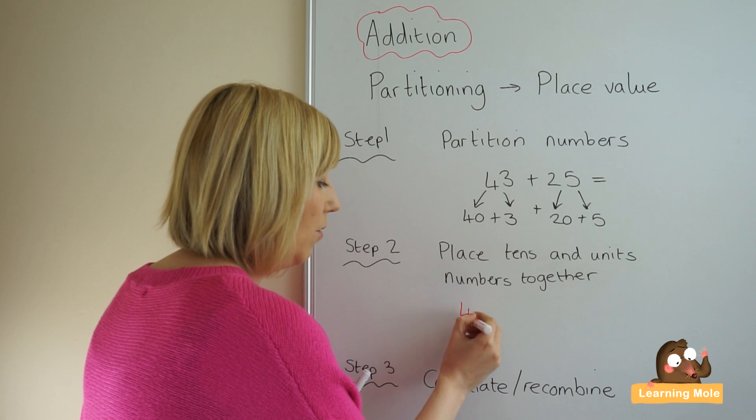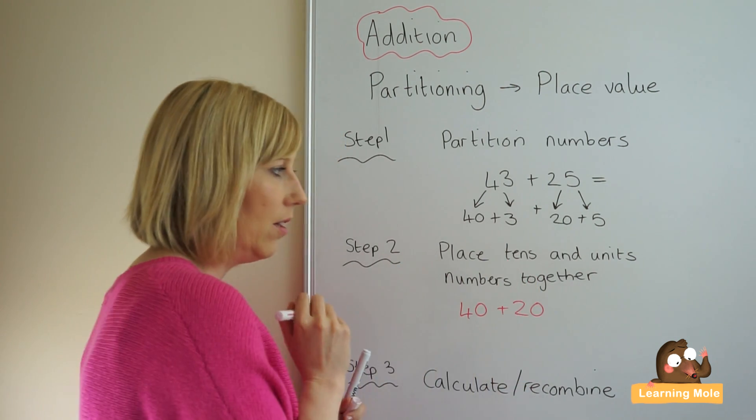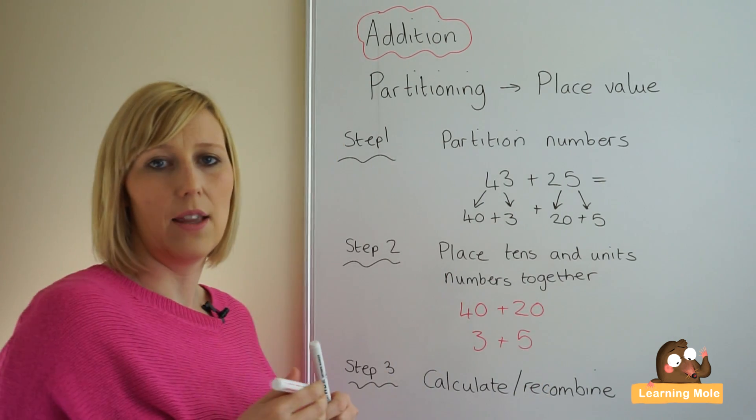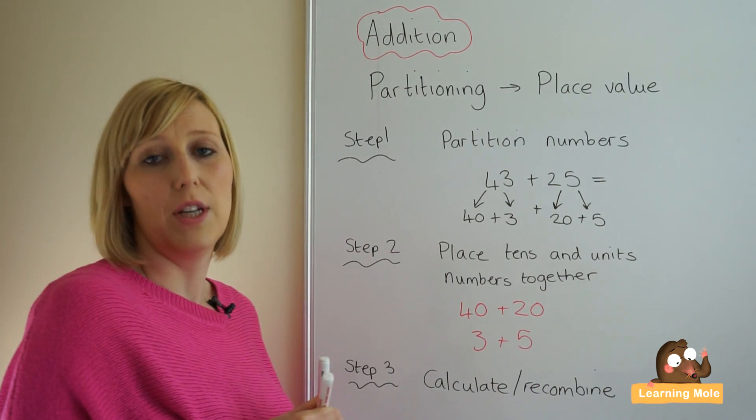So knowing that 40 plus 20 go together and 3 and 5. You've got your two tens numbers together, you've got your two units numbers together.